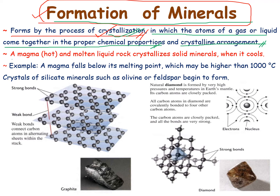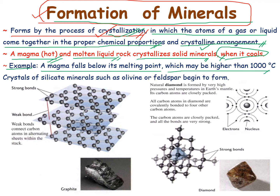When a magma — hot and molten liquid rock — crystallizes into a solid form, it gives rise to minerals. This happens when the magma cools. For example, when magma falls below its melting point, which may be higher than 1000 degrees Celsius, crystals of silicate minerals such as pyroxene or feldspar begin to form. This is the kind of mineral formation as an example.